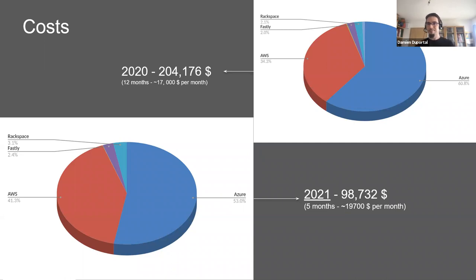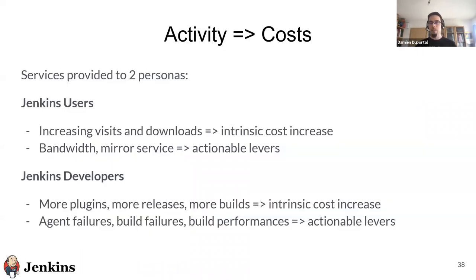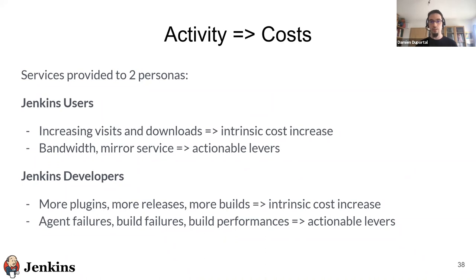We are working on and trying to determine if this cost increase comes from things we can work on or if it's intrinsic. We have more downloads, more plugins, more people visiting. So we cannot just say stop — this is an intrinsic cost increase, but there are still some levers we can work on to be sure we control the costs. We have two main personas responsible for the services: users that download plugins or visit pages, and developers who use ci.jenkins.io to build plugins, contribute, and validate code.